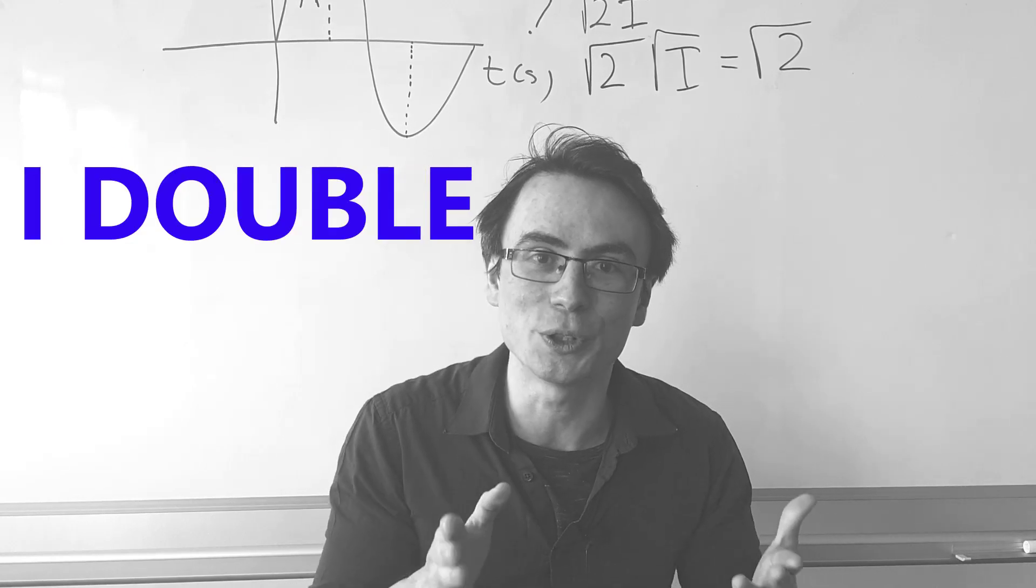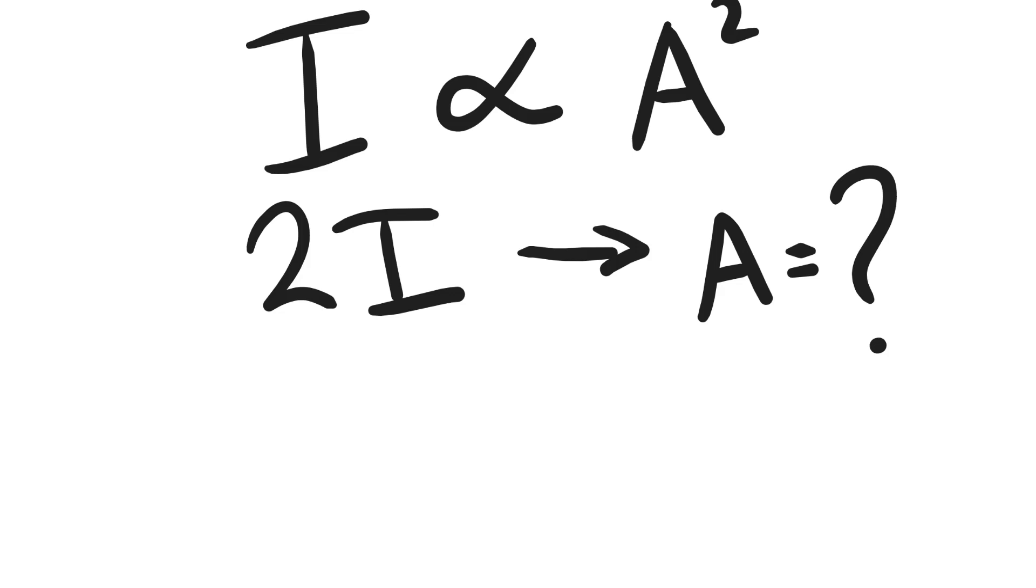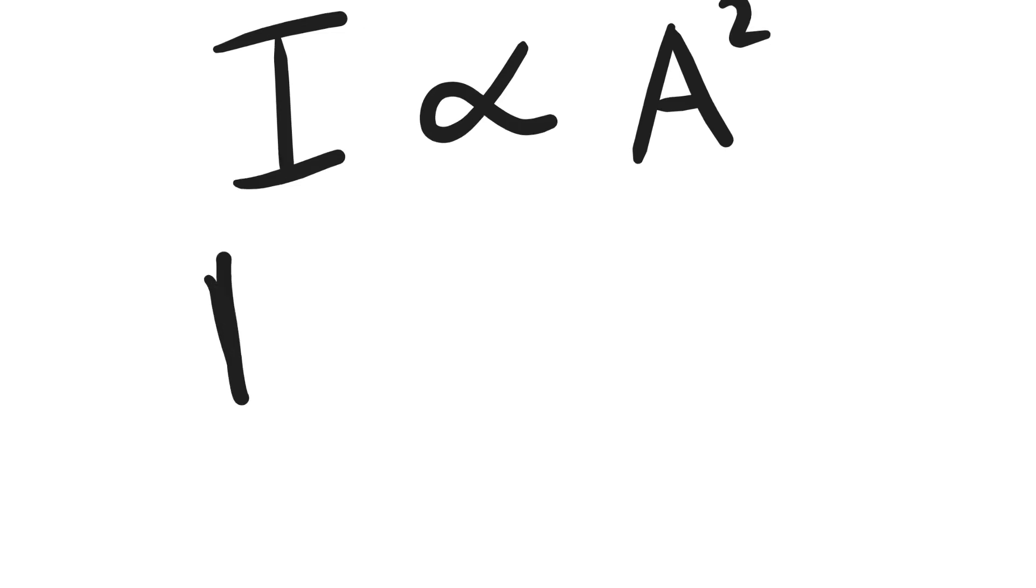But what if I double the intensity? How will the amplitude change? Well, if I square root both sides, I get that the square root of the intensity is proportional to the amplitude.